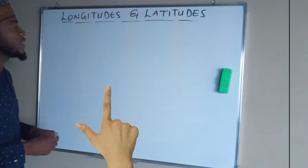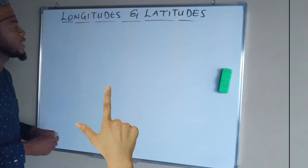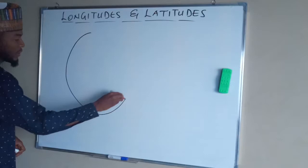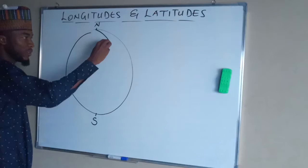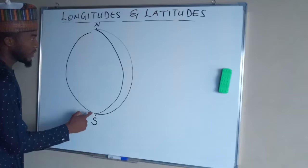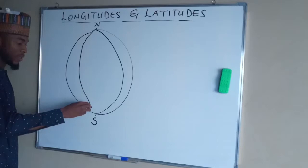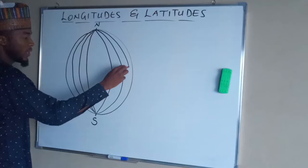Longitudes are imaginary lines passing through the Earth's surface from its axis forming a cycle of equal radius. Suppose this is an Earth. Longitudes pass through the surface of the Earth from north to south, or from south to north, from a fixed point forming a cycle — from north to south, from this point to another point — forming a complete cycle of equal radius. These are longitudes.